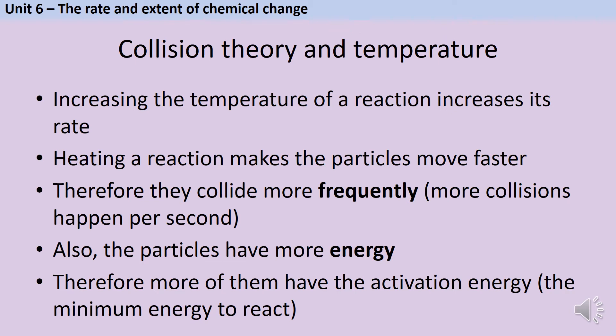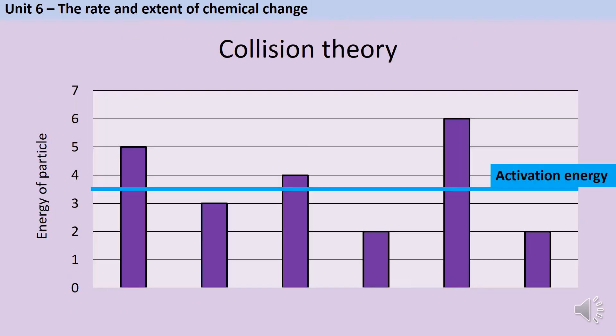However the extra thing is that every particle has more energy. And therefore more of them have that minimum energy requirement to react, the activation energy. Here's another way that I can visualise the same concept. Within a solution I have thousands of particles but here I'm just showing six of them. And you can see that they all have slightly different amounts of energy which is completely normal. There's a fixed amount of energy that we call the activation energy that they need to have in order to react. So in this particular example three of my particles have got enough energy to react and if they collide something will happen.